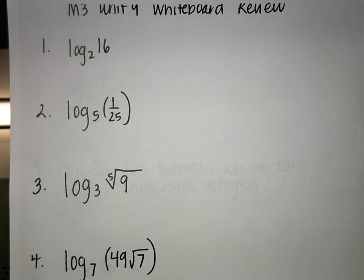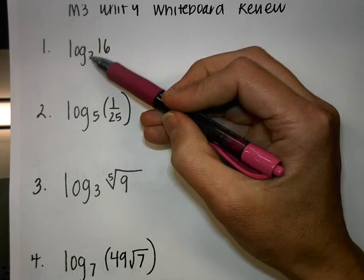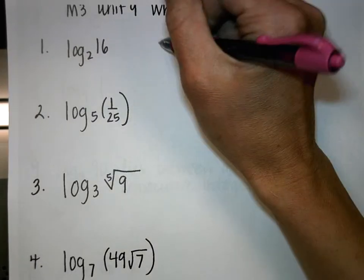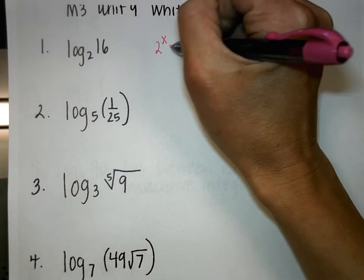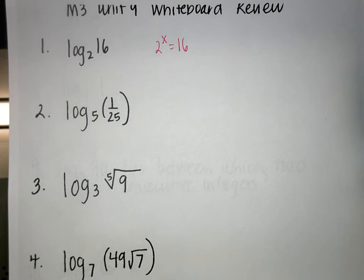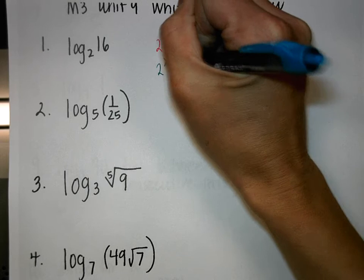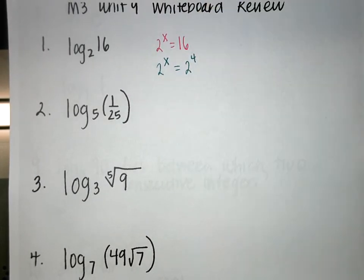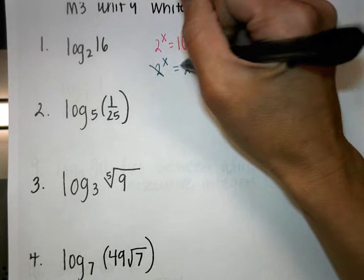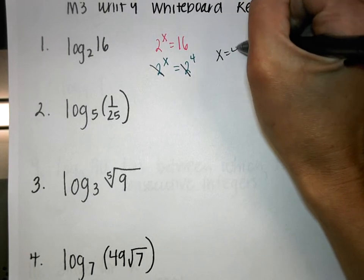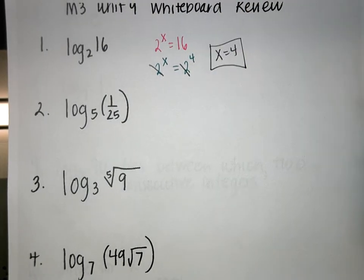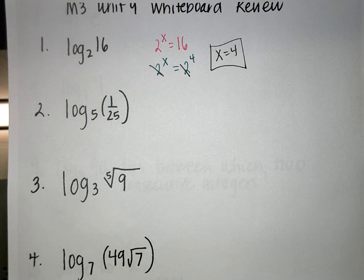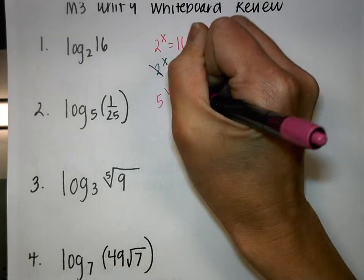Math 3 Unit 9 whiteboard review, number 1. This is saying 2 to what power is 16. You can make like bases, so we have 2 to the X equals 16, which is 2 to the 4th.